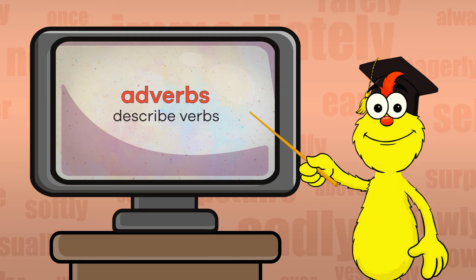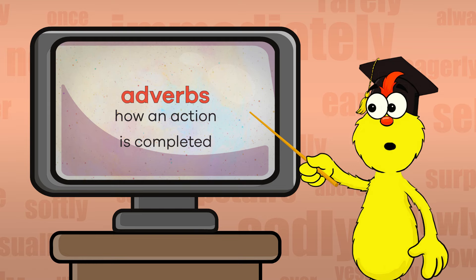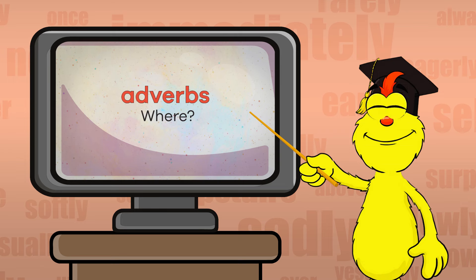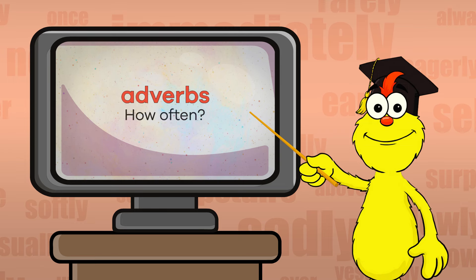From this example we see that adverbs are words that describe verbs, but they do something else important too. They also tell how an action is completed, or answer the questions of when, where, how, how much, or how often.